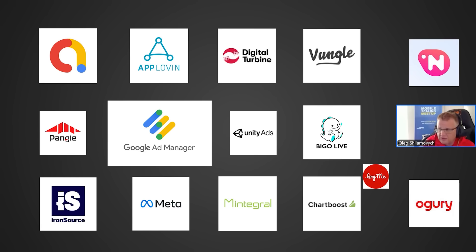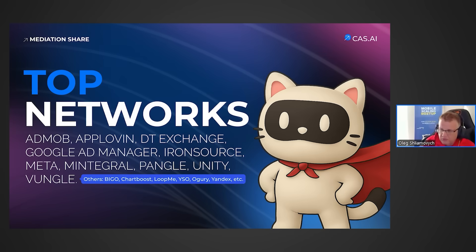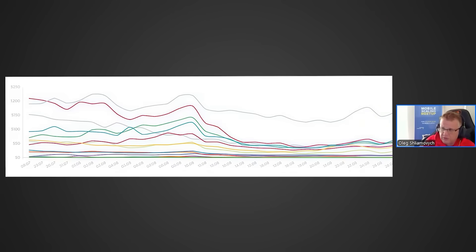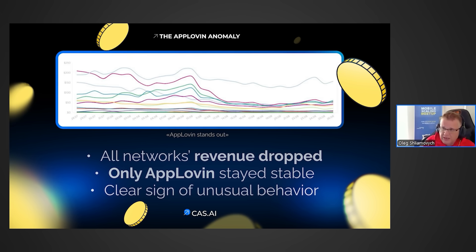We decided it was important to investigate what changed at the specific moment our revenue dropped, and this is exactly what we discovered. The very top line here represents AppLovin. We saw that revenue had actually dropped across all other networks except for AppLovin, which strongly suggested to us that the problem was right there.